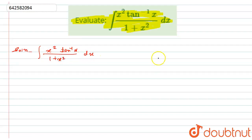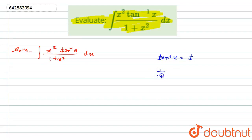Here I will use substitution. I will substitute tan inverse of x equals t. Taking the derivative, we get 1 upon 1 plus x squared times dx equals dt.